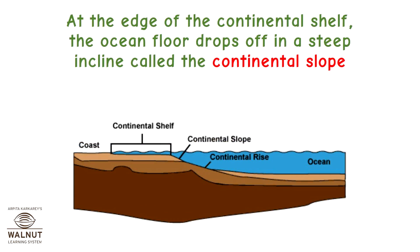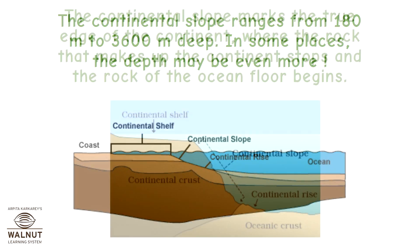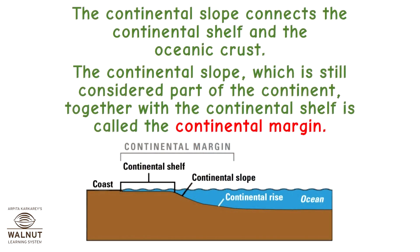At the edge of the Continental Shelf, the ocean floor drops off in a steep incline called the Continental Slope. The Continental Slope ranges from 180 meters to 3600 meters deep. In some places, the depth may be even more. The Continental Slope marks the true edge of the continent, where the rock that makes up the continent stops and the rock of the ocean floor begins. The Continental Slope connects the Continental Shelf and the oceanic crust.